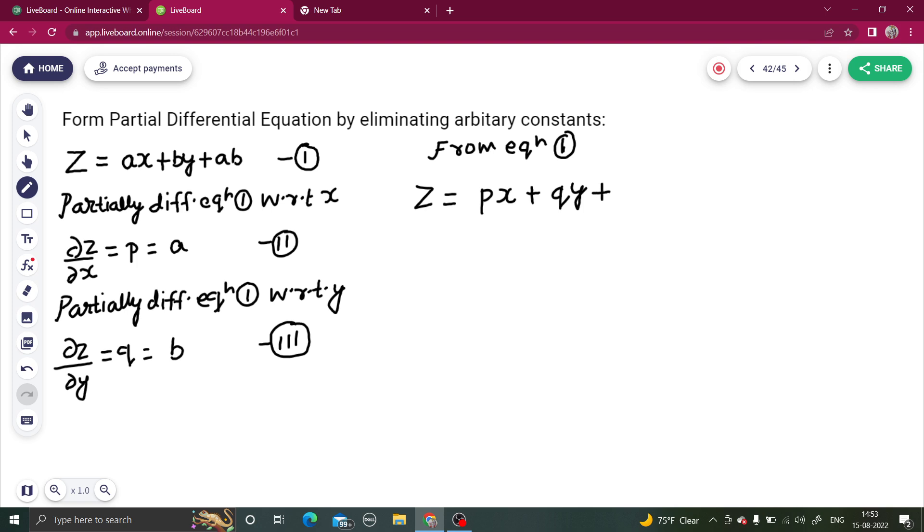And third term, we can write in place of a we can write p. In place of b we can write q. So pq. So all the arbitrary constant are eliminated now. And we get a partial differential equation as z equals to px plus qy plus pq.